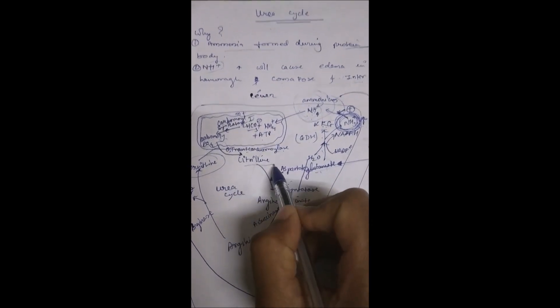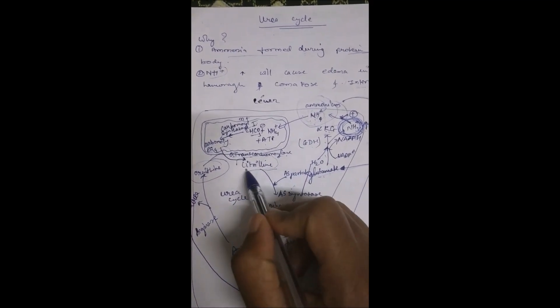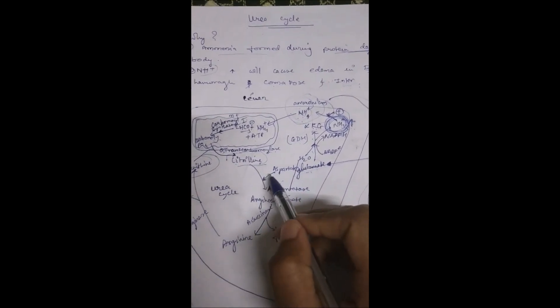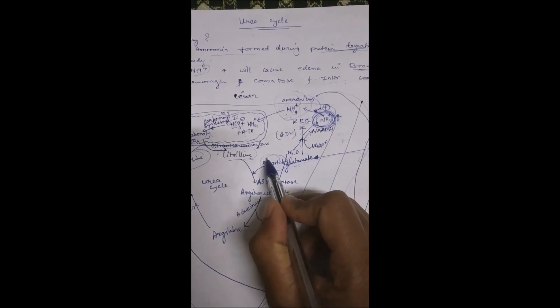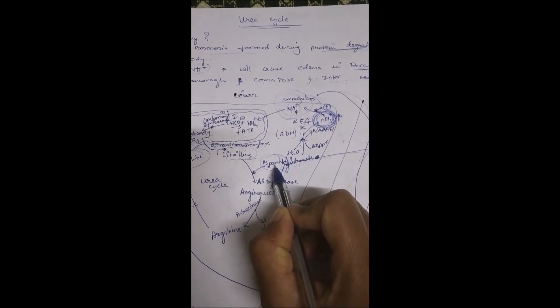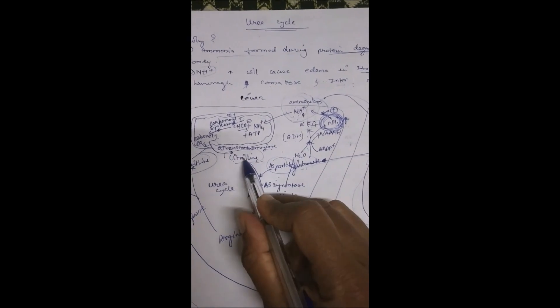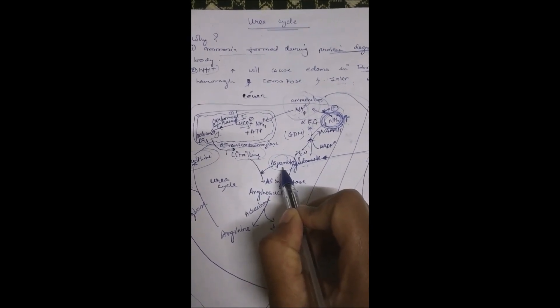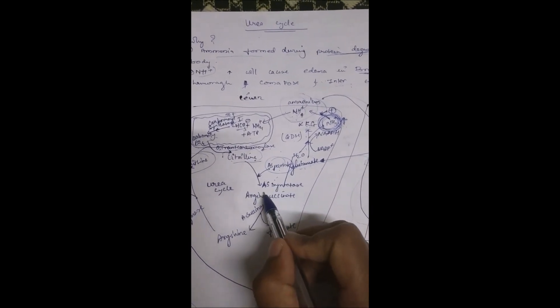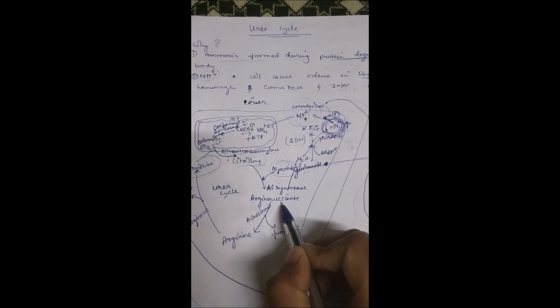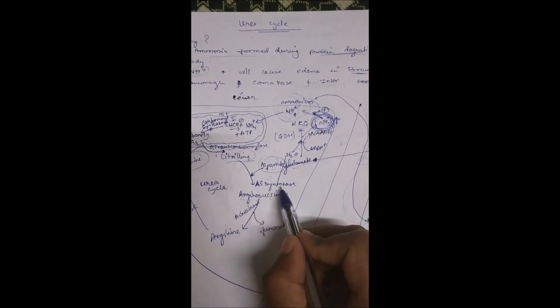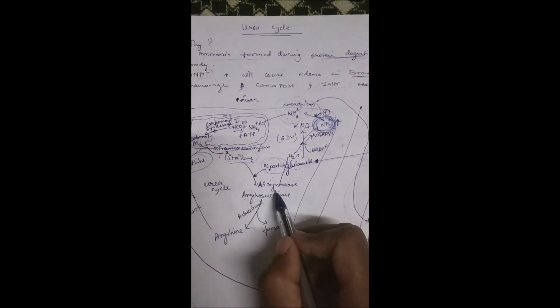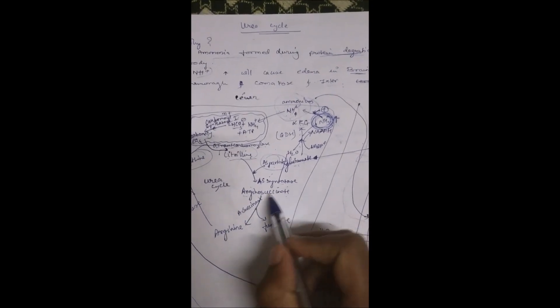This citrulline will react with aspartate, which was produced due to aspartate-malate shuttle present in the cell. This will react with aspartate and citrulline to produce argininosuccinate using argininosuccinate synthetase.